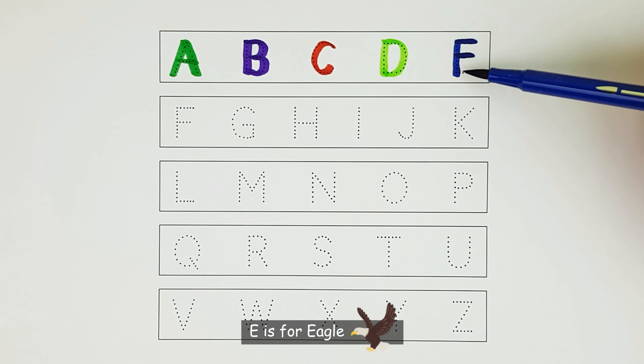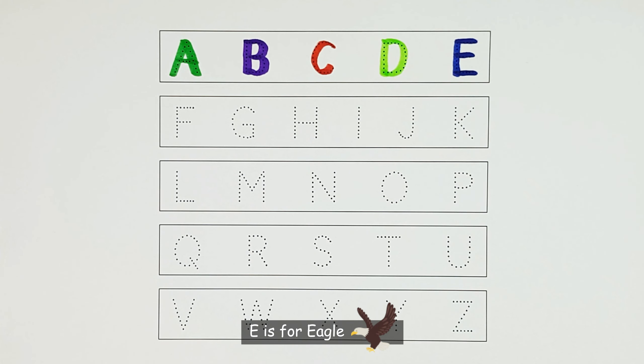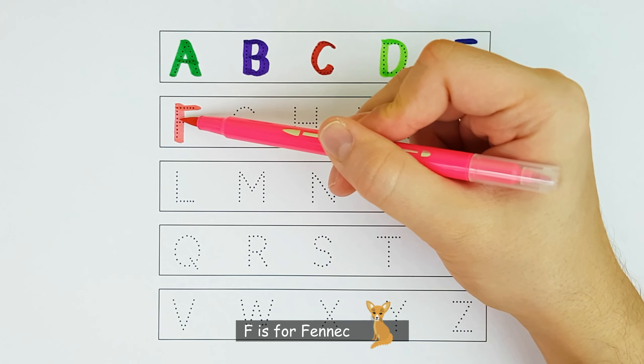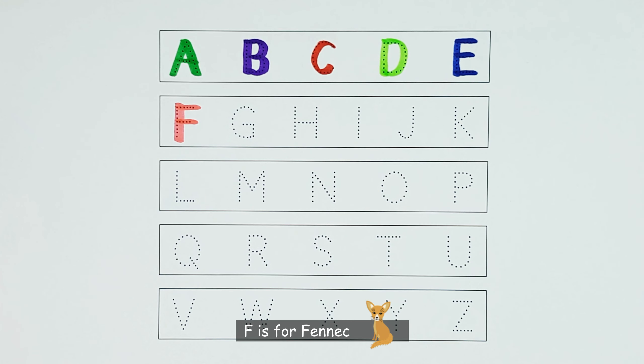E. E is for eagle. E. F. F is for fennec. F.